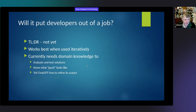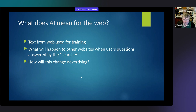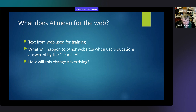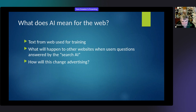Another interesting question is what does AI mean for the web? There's been a lot of noise about Microsoft using ChatGPT as part of Bing search, and Google has Bard. What does it mean for the web when your search engine has ChatGPT built in? If you go to Google and never leave Google, you never see the rest of the web because all questions are answered by Bard. What does this mean for training, since most training data comes from the web? If the web stagnates, how do you get more training data? How would this change advertising if you don't even see the things being advertised?